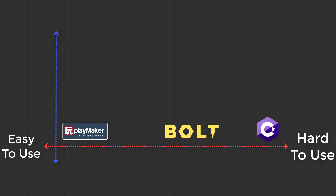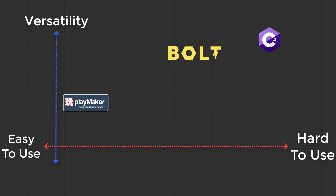But then on the other axis, I think about versatility — how powerful the tool is. And this is where Bolt just kills it. Since it's almost one to one with C sharp, it's almost as versatile and almost as powerful. Playmaker just isn't as versatile or as powerful unless you can code in C sharp, in which case it's a very powerful tool. So when I think about it on the spectrum, Bolt is the winning solution for my students and for a lot of game developers who are just getting into Unity.